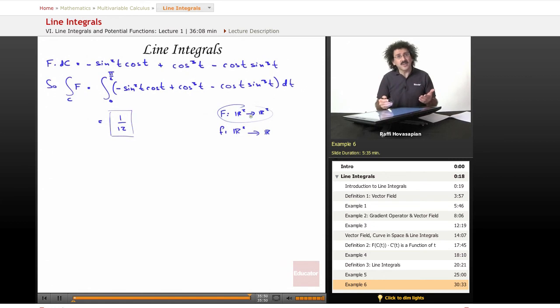all you really have to worry about is just this basic definition. Form f of c of t, form c prime of t, take the dot product, you end up with a function of a single variable t, and then you just integrate it, just like single variable calculus. Okay, thank you very much for joining us here at educator.com. We'll see you next time. Bye-bye.